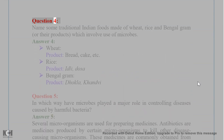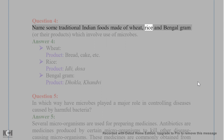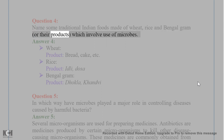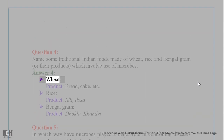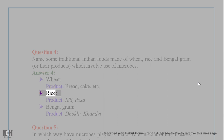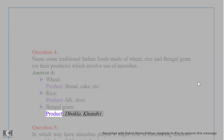Question 4. Name some traditional Indian foods made of wheat, rice, and Bengal gram, or their products, which involve use of microbes. Answer 4. Wheat products: bread, cake, etc. Rice products: idli, dosa. Bengal gram products: dhokla, khandvi.